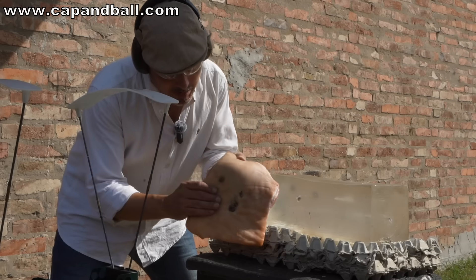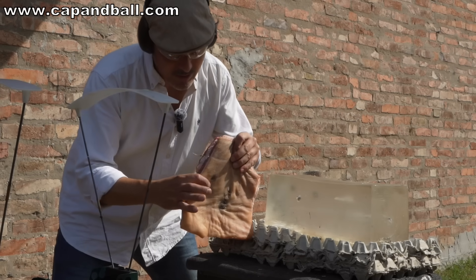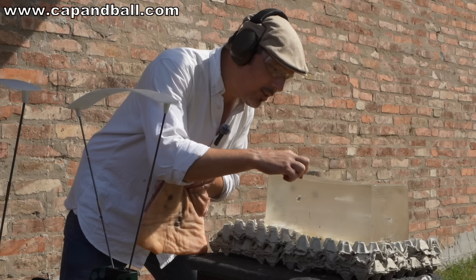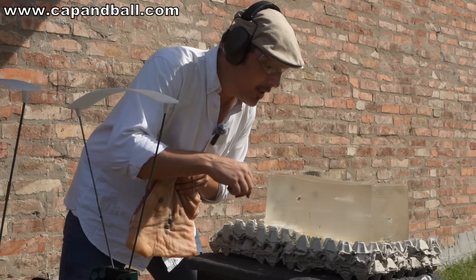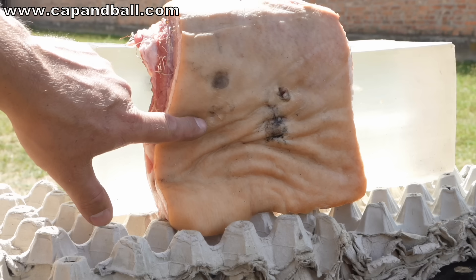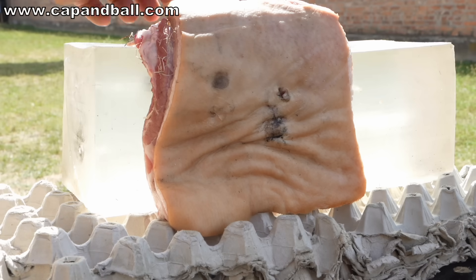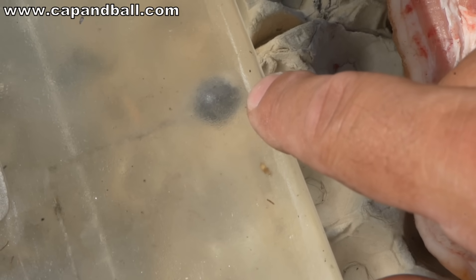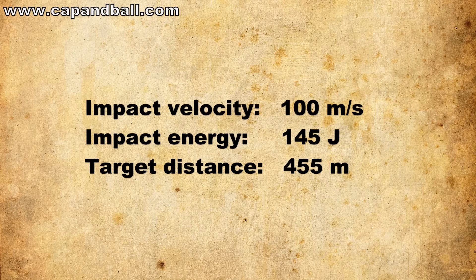At 102 meters per second, it penetrated the skin and penetrated the entire meat — about 4 centimeters — and is embedded in the gelatin block at a depth of around 1.5 centimeters. This is the point of penetration, and there is the bullet embedded in the gelatin. Next impact velocity is 100 meters per second — that is 145 joules of kinetic energy, corresponding to 455 meters target range.